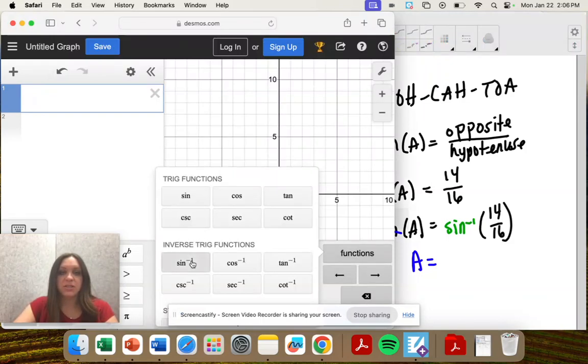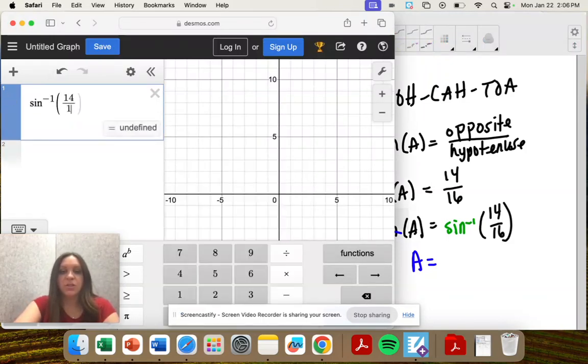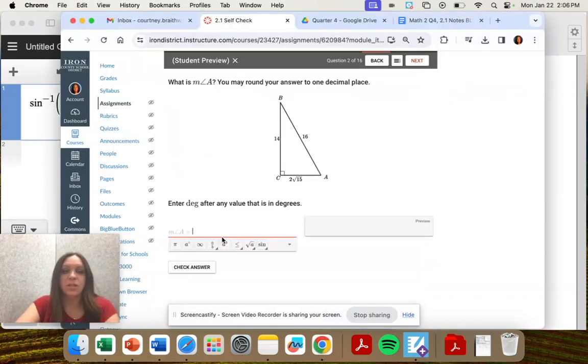So I'm going to go to functions, sine inverse, 14 over 16, which is 61.0 rounded. We're rounding to one decimal place. So 61, and don't forget degrees.